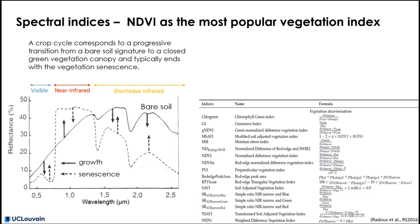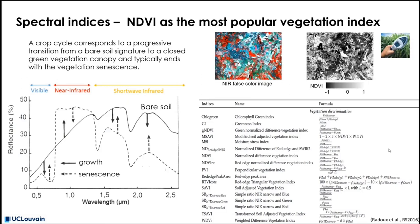Some indices have been listed here and are based on the same principle, but each tries to improve a specific aspect. For instance, the SAVI aims to reduce the influence of soil background reflectance on the vegetation index value. On the right side of the slide, an NDVI image shows dark pixels without or with very little green vegetation, while white pixels represent green vegetation. The NDVI has been so popular that handheld instruments now allow farmers to measure it on the ground as well.